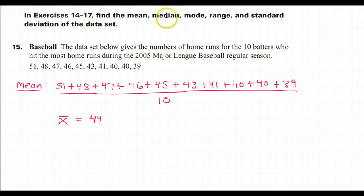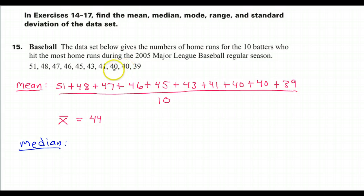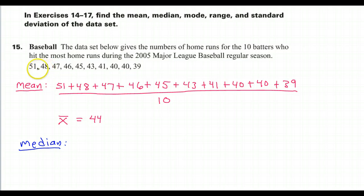If we want to find the median, it's important that the numbers be in order from either least to greatest or greatest to least. This time we're lucky because the numbers are already in order from greatest to least. If the numbers are in order, the median is going to be the middle number. In this case, because there are ten numbers, there will be two middle numbers.